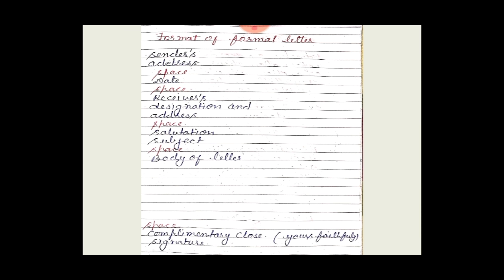Now, the format of a formal letter. In a formal letter, we always write the receiver's address. First, we write the sender's address — more than two or three lines. The city name is written on a separate line.